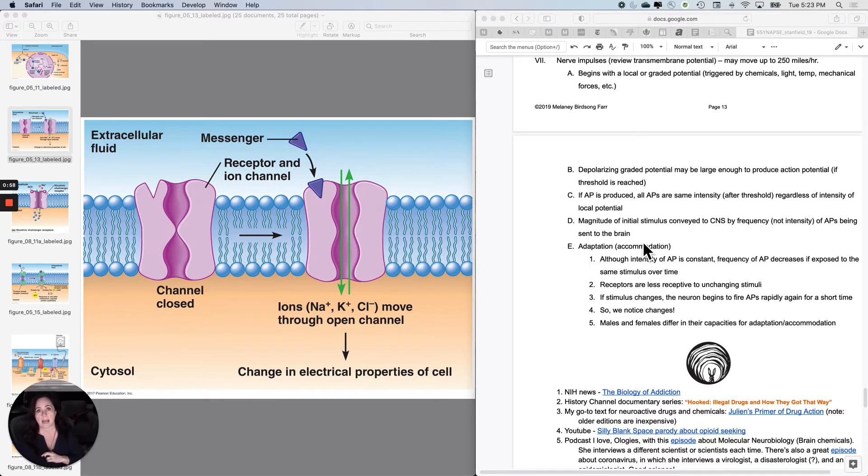But we also have the capacity to accommodate out extraneous information and pay more attention to pertinent information. And that concept is called adaptation or accommodation. Although the intensity of each action potential is constant, if I am encountering a constant stimulus like the feeling of my clothes on my body or like a constant sound, then that is not likely to be something that will eat me, that I can eat, or that I could have sex with, which is generally going to require frequent action potentials evolutionarily.